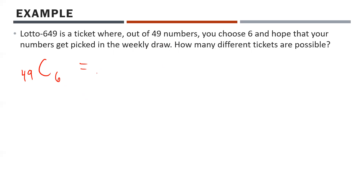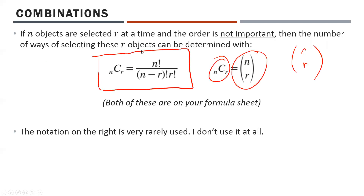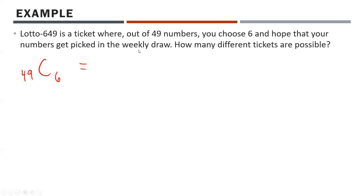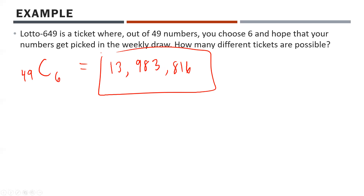The number of possible Lotto 649 tickets — throwing 49C6 into your calculator — is 13,983,816. That is exactly how many different possible tickets there are. So if you bought one ticket, you'd have a one in 13,983,816 chance of winning the lottery, which is pretty darn low.